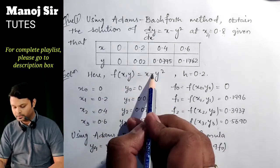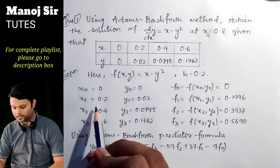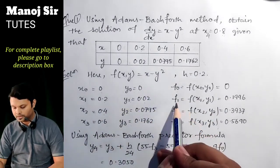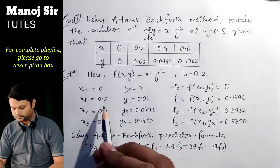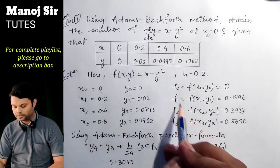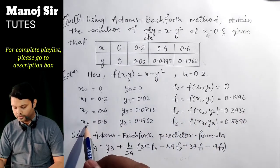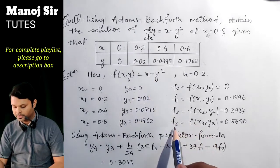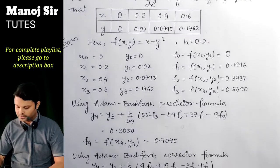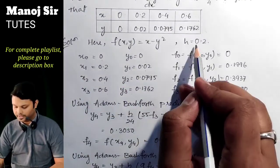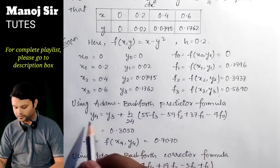Substituting into f(x, y) = x − y²: f₀ = 0 − 0² = 0; f₁ = 0.2 − (0.02)² = 0.1996; f₂ = 0.4 − (0.0795)² = 0.3937; f₃ = 0.6 − (0.1762)² = 0.5690, all to four decimal places. We also have h = 0.2.